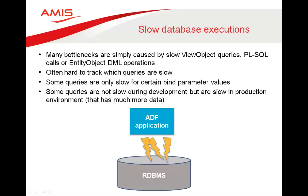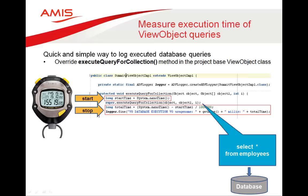Many bottlenecks are simply caused by slow view object queries, PL/SQL calls from application modules, or entity object DML operations. Quite often it is hard to track which database executions are slow. Some queries are only slow for certain bind parameter values; some are not slow in development but are slow in production with much more data. A quick and simple way to log slow queries is to override the executeQueryForCollection method in the project-based view object class. You can use the ADF logger to print how long a query took and its usage name — like a stopwatch.